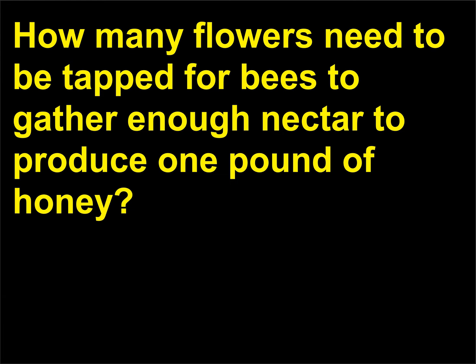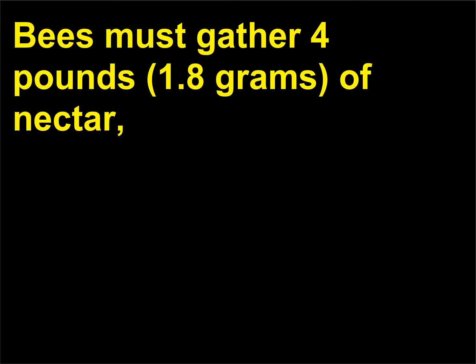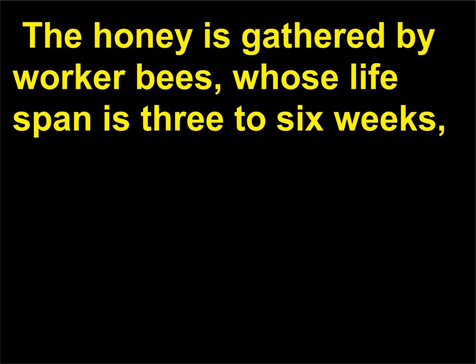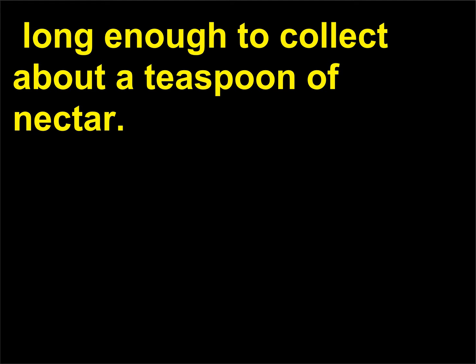How many flowers need to be tapped for bees to gather enough nectar to produce one pound of honey? Bees must gather four pounds of nectar, which requires the bees to tap about two million flowers, in order to produce one pound of honey. The honey is gathered by worker bees, whose lifespan is three to six weeks — long enough to collect about a teaspoon of nectar.